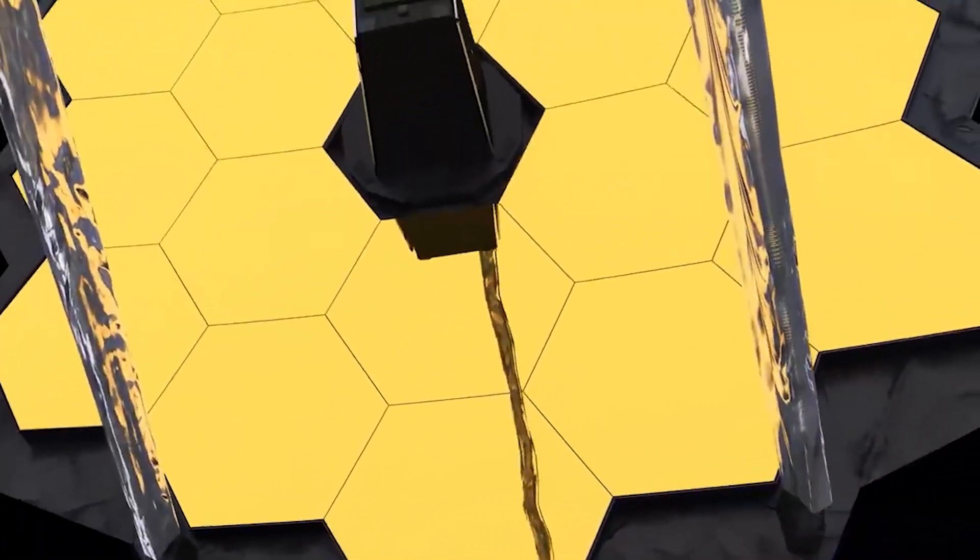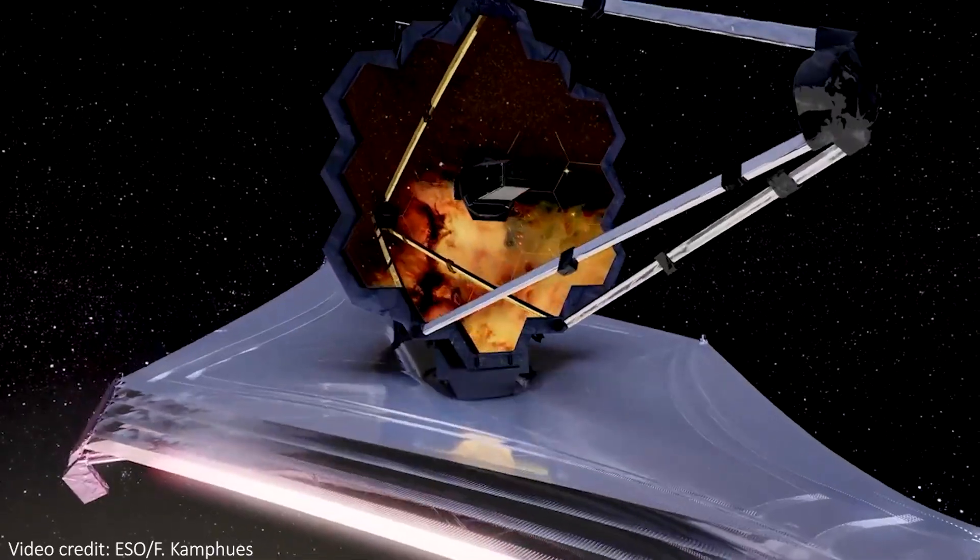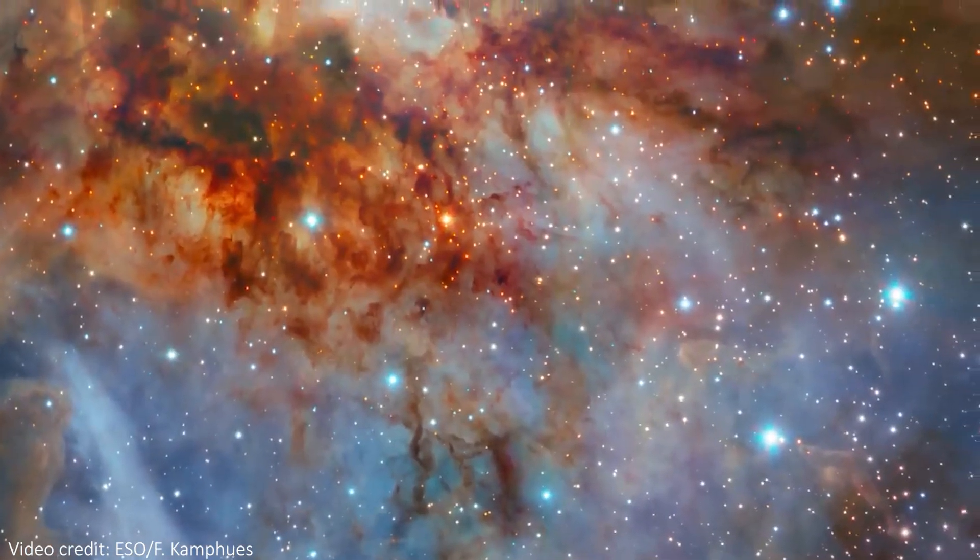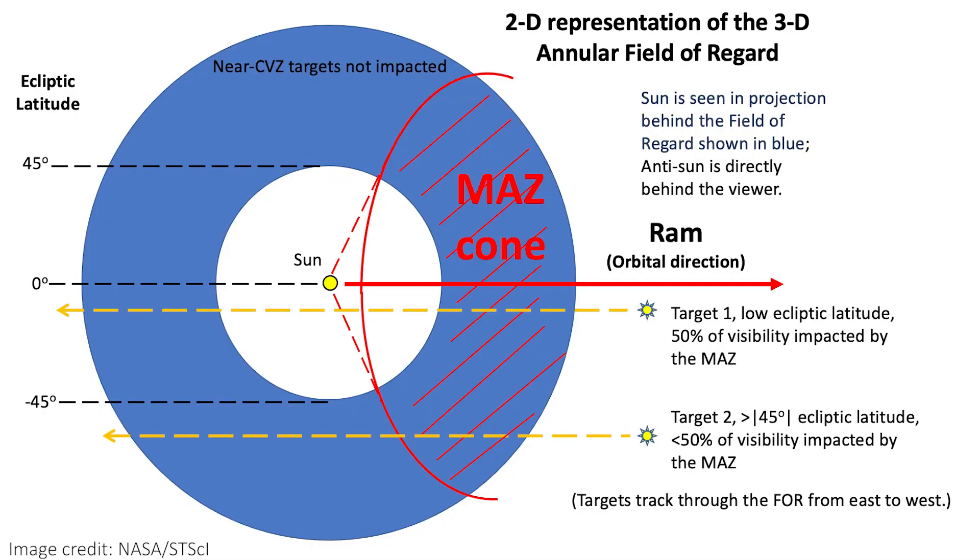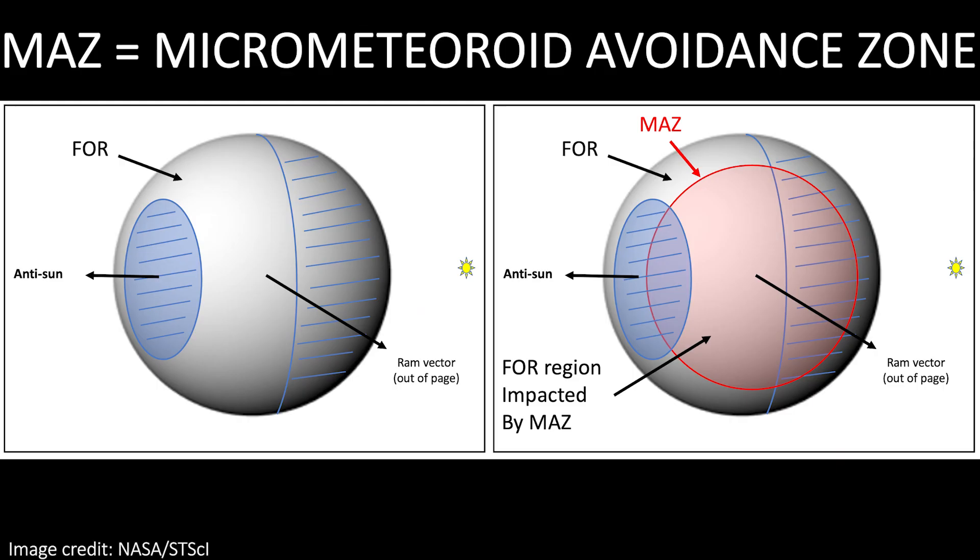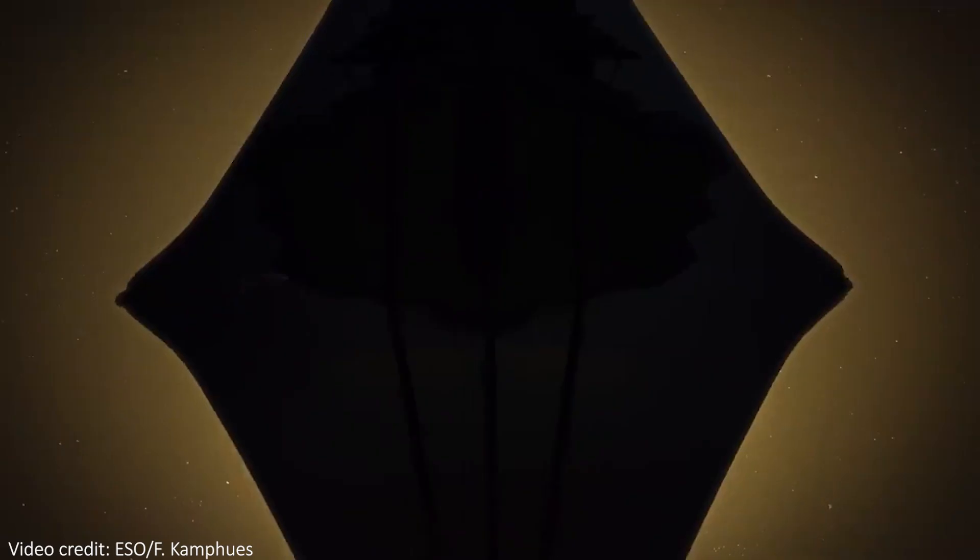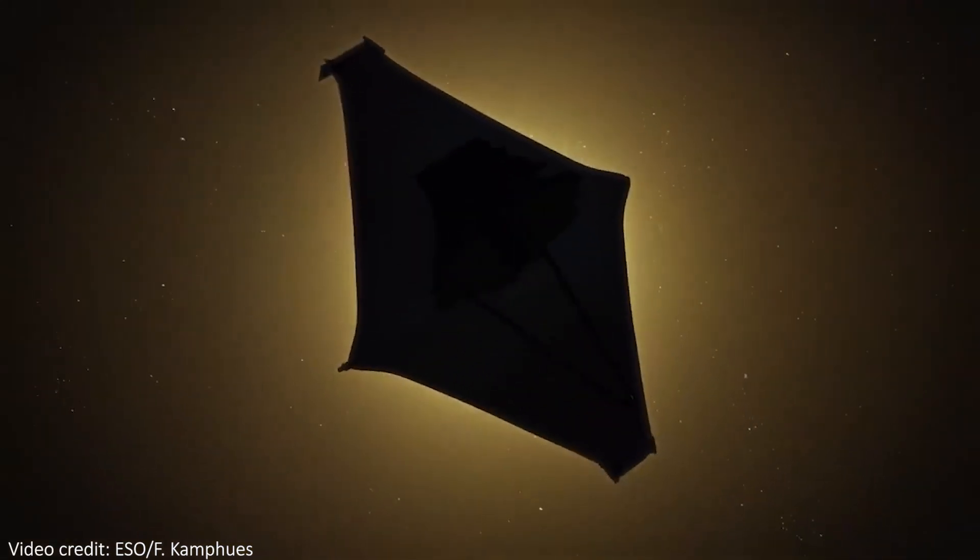To minimize the risk of future impacts, from the next set of observation proposals, JWST will avoid pointing in directions that have more chance of micrometeoroids. It will basically avoid these micrometeoroid hotspots. These so-called micrometeoroid avoidance zones will hopefully protect the mirror from the most damaging head-on impacts, but actually won't stop it observing any objects on the sky.